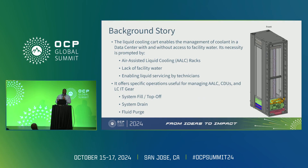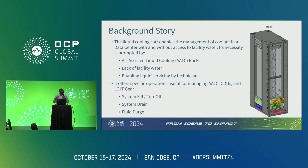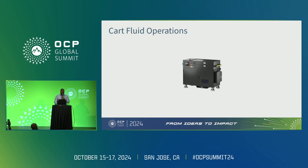In developing the cart, we needed it to manage the fluid inside the AALC rack. There are a few primary functions required to enable this: system fill and top-off, which is putting liquid into the rack; system drain, which is removing fluid from the rack; and then some kind of purge so you can get the majority of the fluid out of the rack itself.